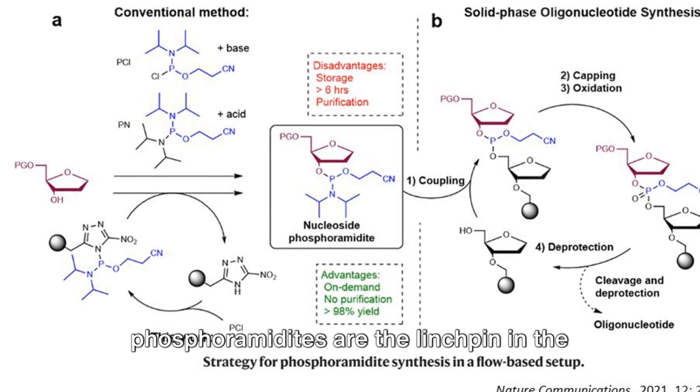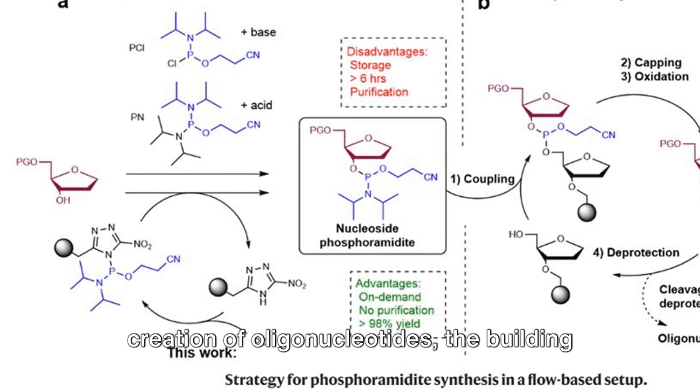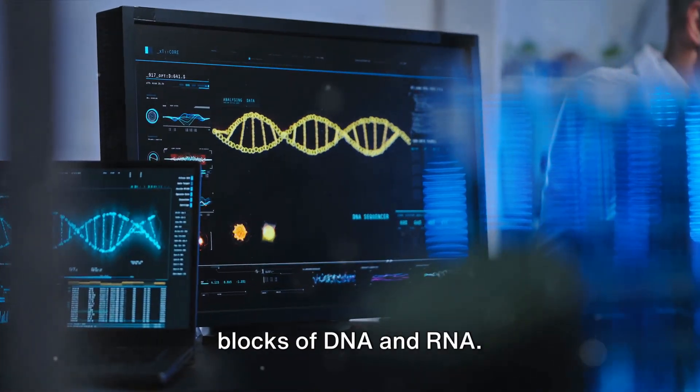In the realm of molecular biology, phosphoramidites are the linchpin in the creation of oligonucleotides, the building blocks of DNA and RNA.